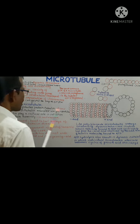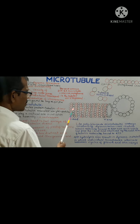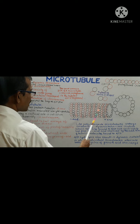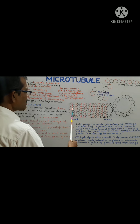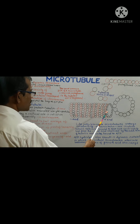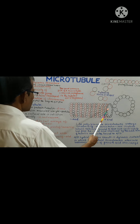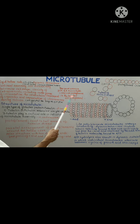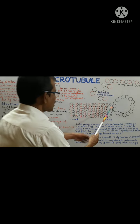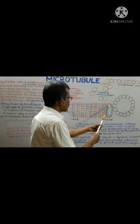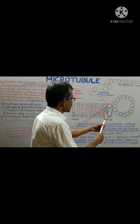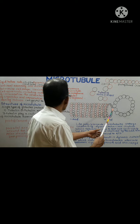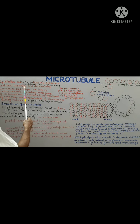Microtubules are rigid hollow rods. This is a microtubule which is a rigid hollow rod. Its outer diameter is between 23 and 27 nanometers, and the inner diameter is between 11 and 15 nanometers.